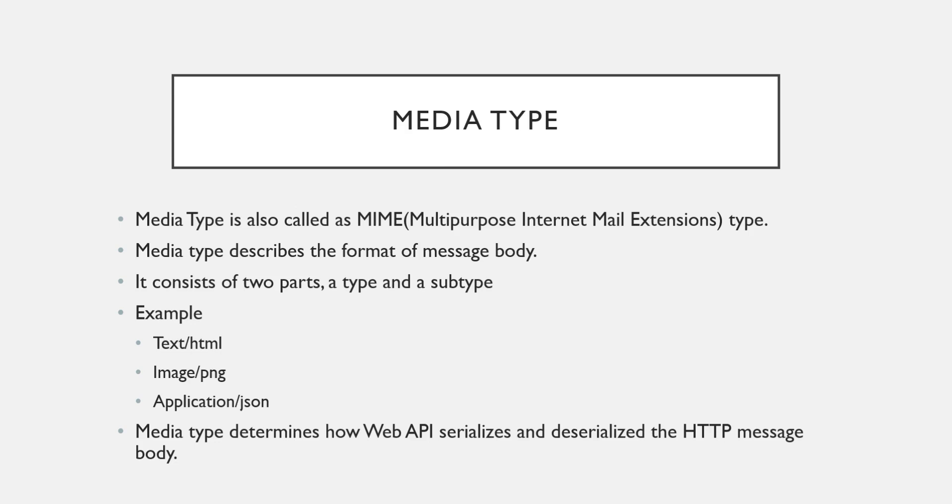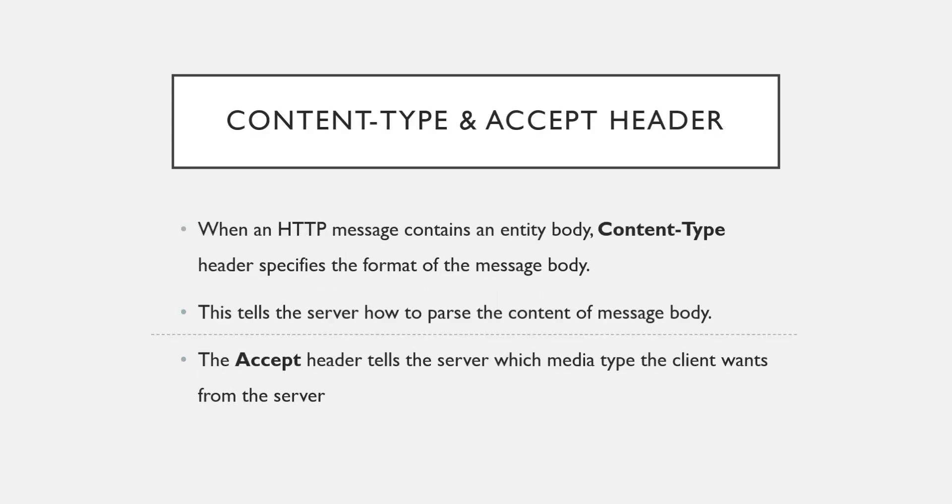Media type determines how your Web API will serialize or deserialize the HTTP message body. Serialization means you are converting your object into a stream of bytes — converting your .NET object to JSON or to XML — so that you can transfer this data over the network. Deserialization is exactly the opposite: converting JSON data or XML data into object form. It's not necessarily JSON and XML; it can be any other data in plain text form which can be converted to object form.